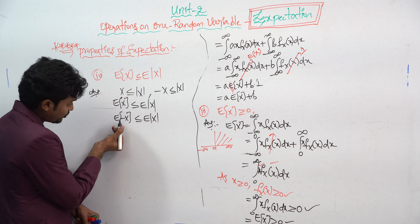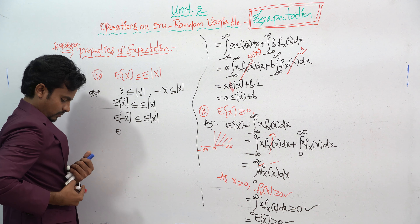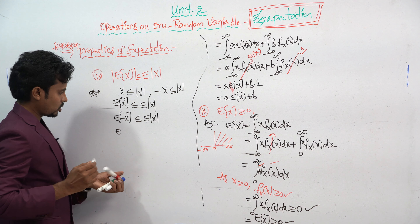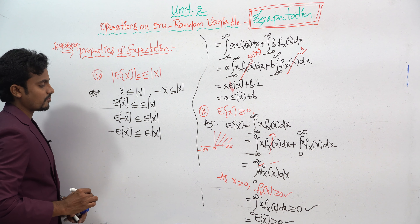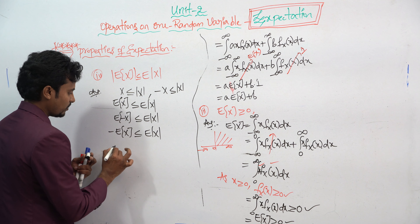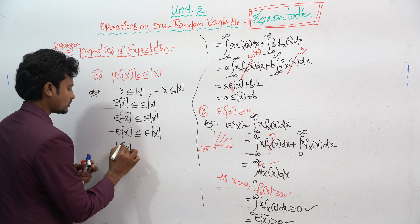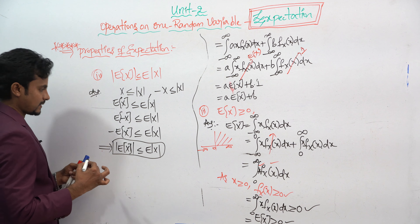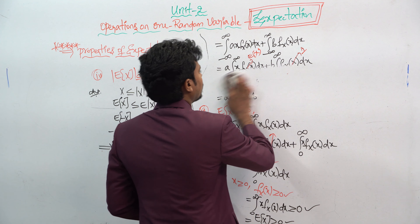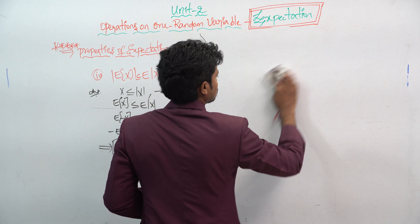Now replace x with −x in the inequality −x ≤ |x|. Applying expectation gives E(−x) ≤ E(|x|). Taking the constant outside, −E(x) ≤ E(|x|), which means minus into minus gives plus, so E(x) ≤ E(|x|) as well. This was our next case.